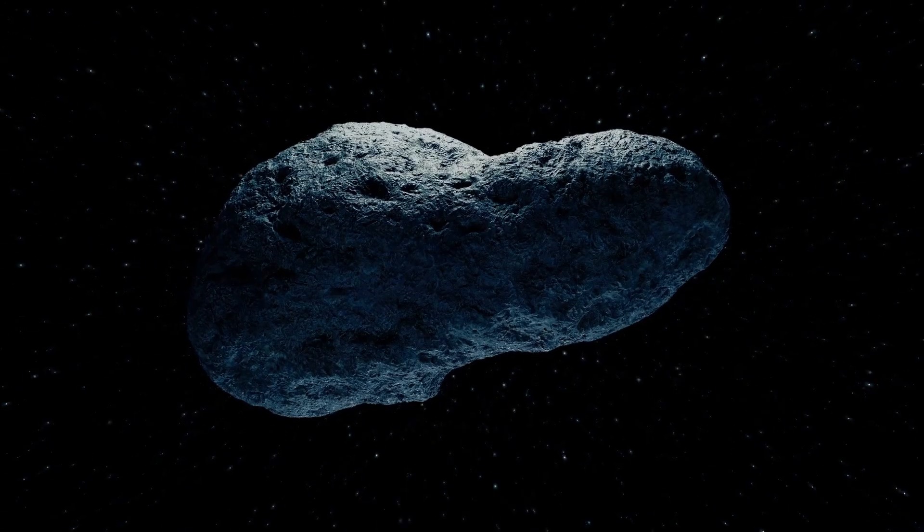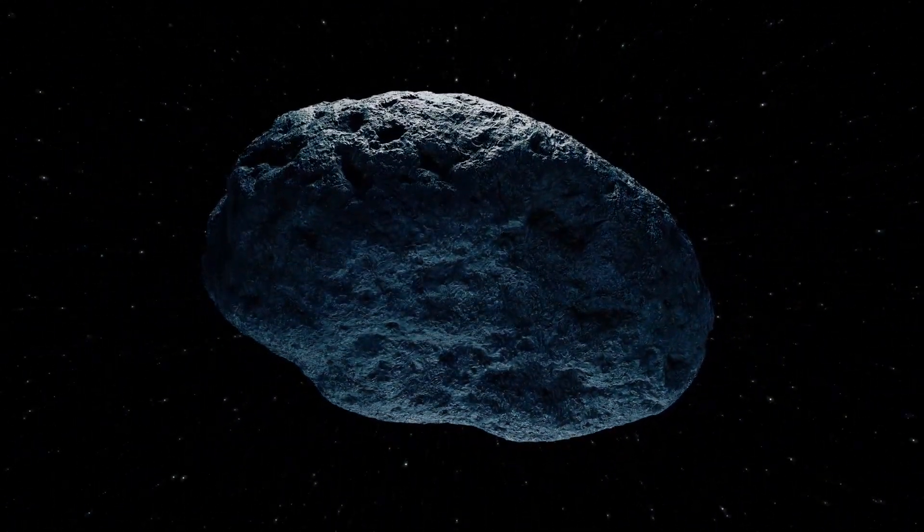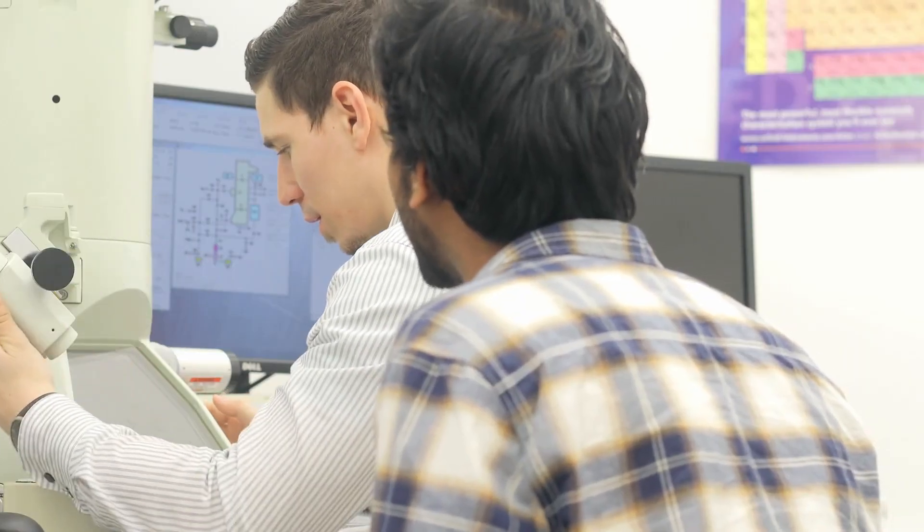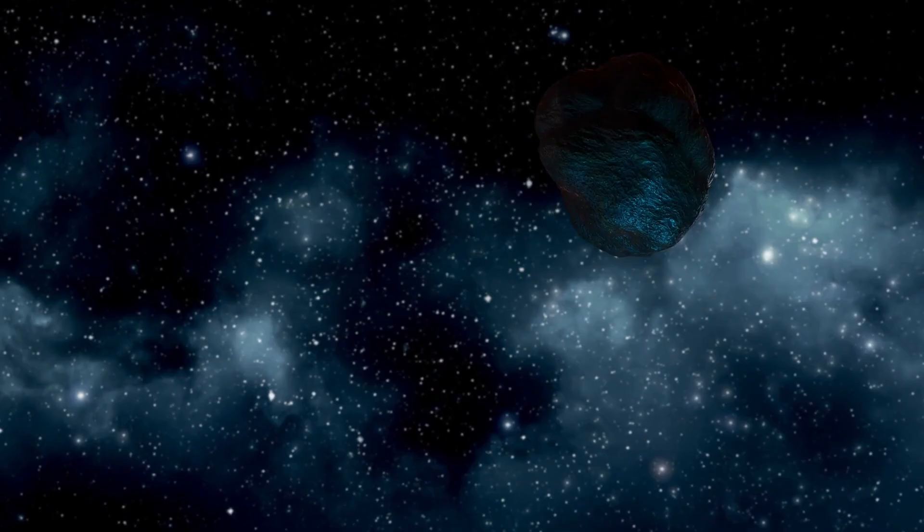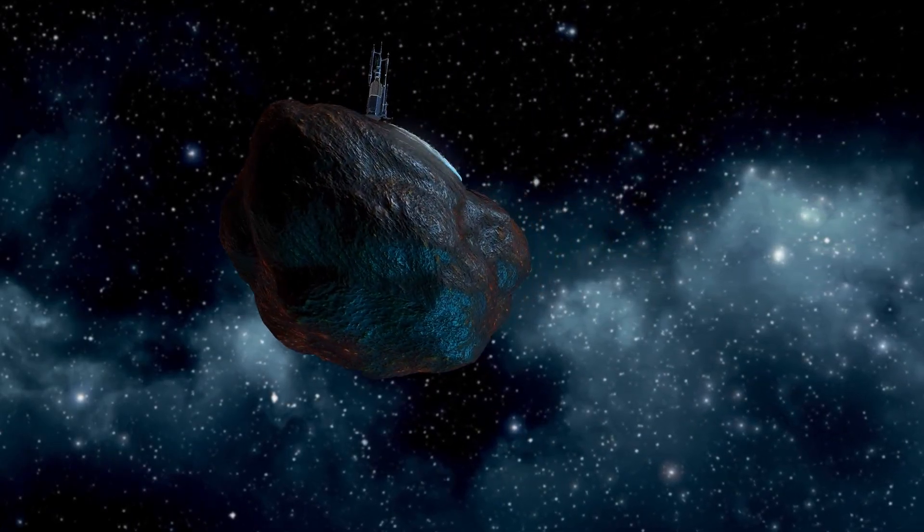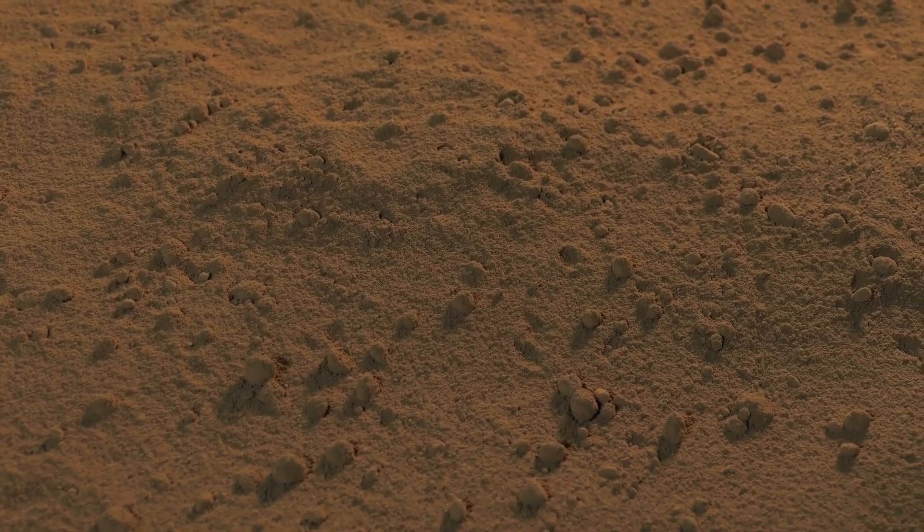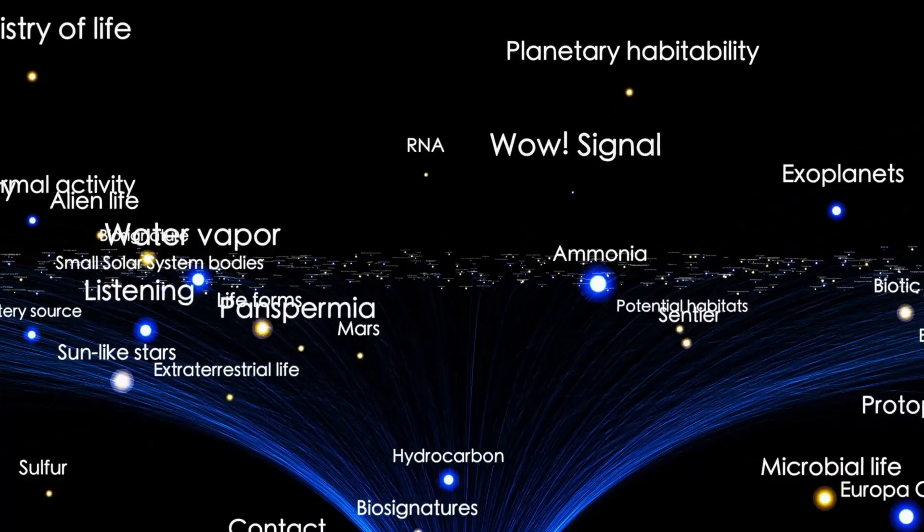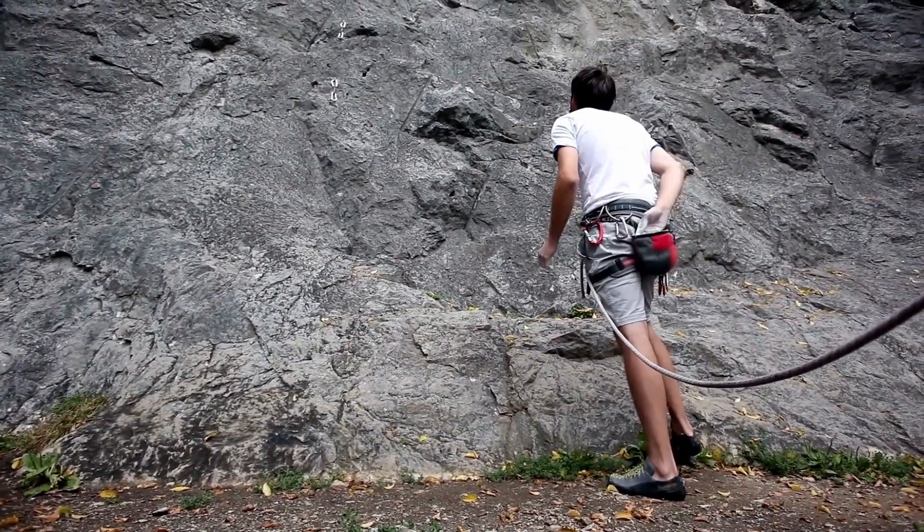A researcher examining the images described the moment of realization. They were looking at the first high-resolution scan, expecting to see craters and irregular rock formations. Instead, they saw a perfectly engineered surface with symmetrical structures repeated across the entire visible area. It was like expecting to photograph a mountain and discovering you're actually looking at a building designed to look like a mountain from a distance. The hexagonal structures aren't natural geological formations. They're manufactured, precision engineered to a tolerance that suggests technology far beyond our current capabilities.